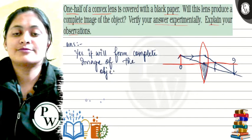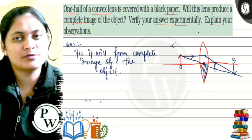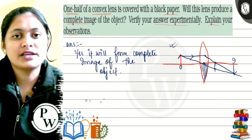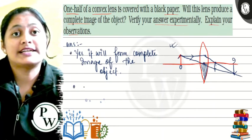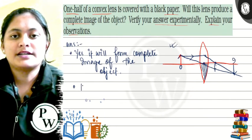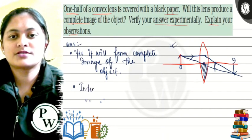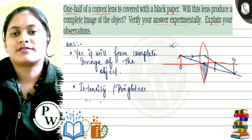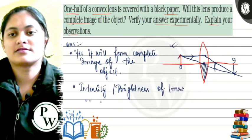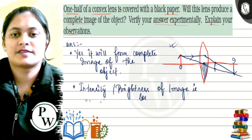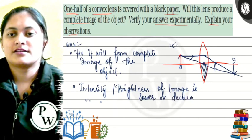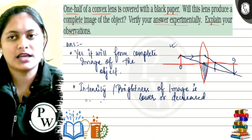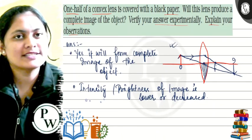Now to verify our answer experimentally and explain our observations: the observation is that the image is complete, but the intensity — the brightness of the image — is lower, or decreased. So I hope you understand this answer. Thank you.